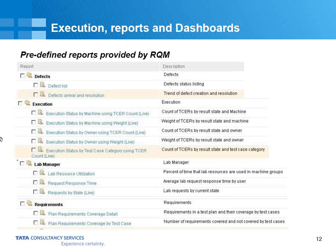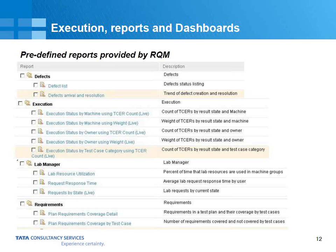These are some reports provided by RQM out-of-the-box. There are many other reports across different categories. Under the defects category, we have a defect list showing your defect status — defects raised while executing manual or automation tests. The defect is raised in RTC, the developer works on it, and you can use this report to know the status. Defect arrival and resolution is similar, but also shows ownership and resolution details.